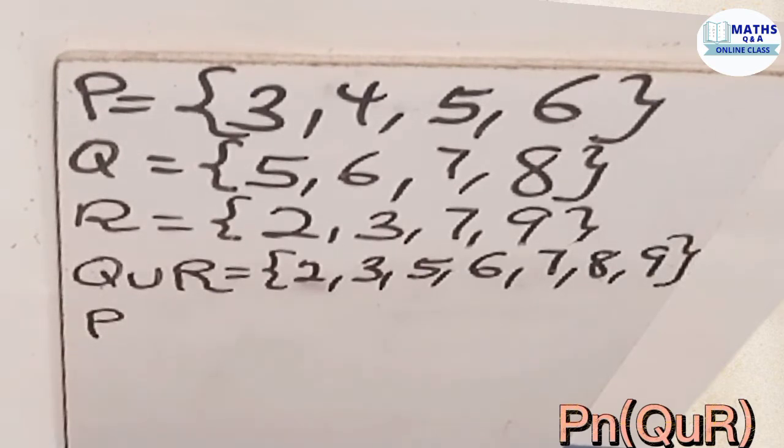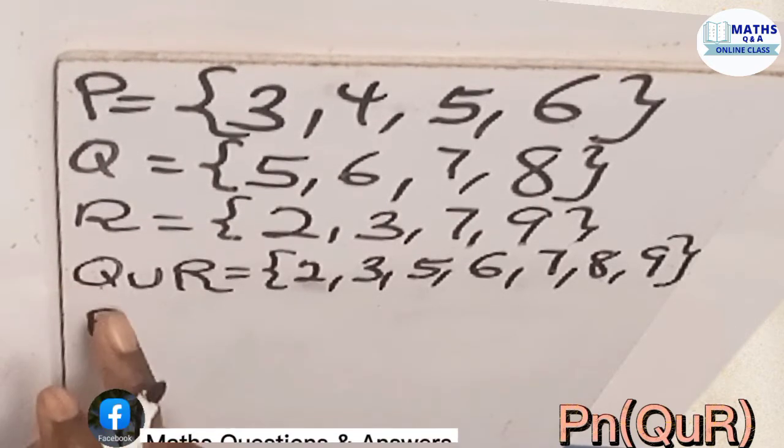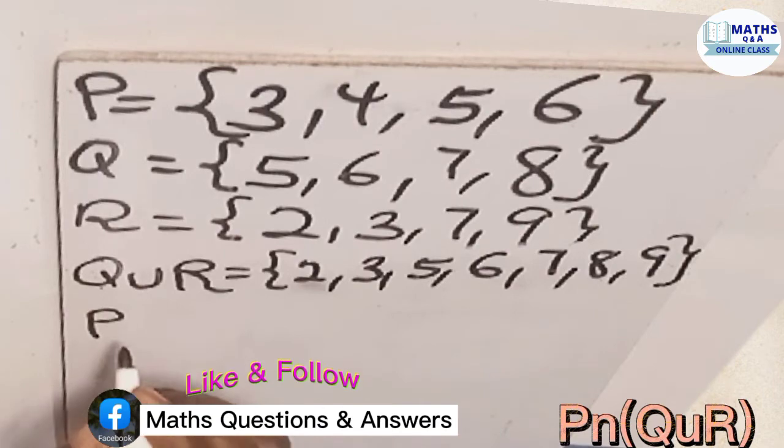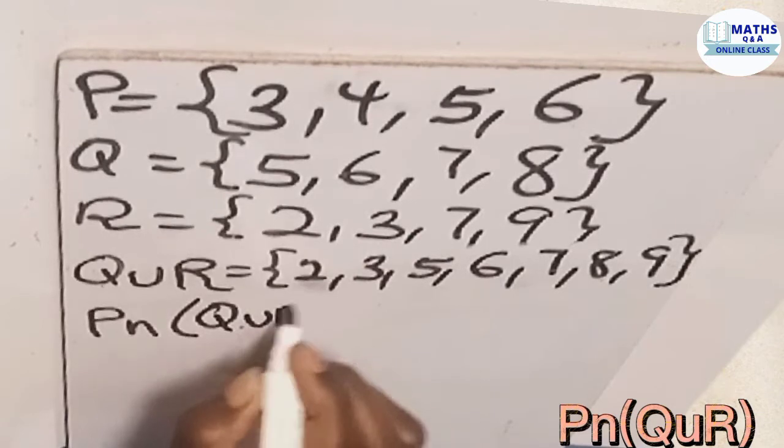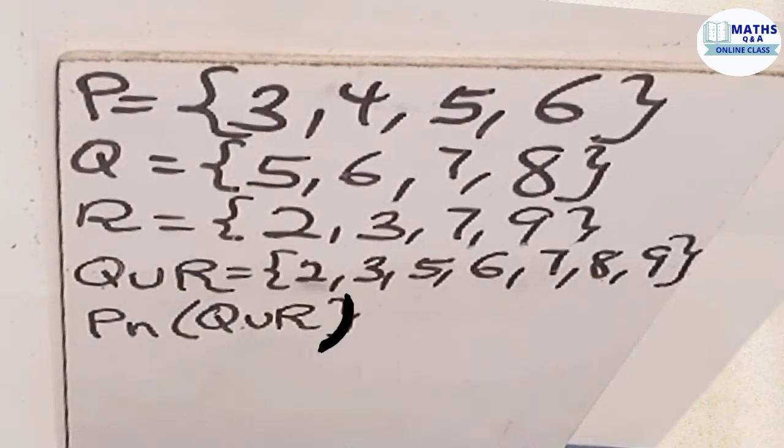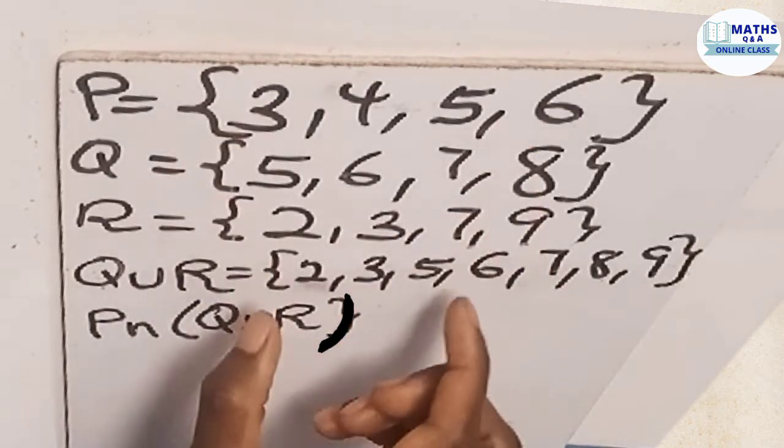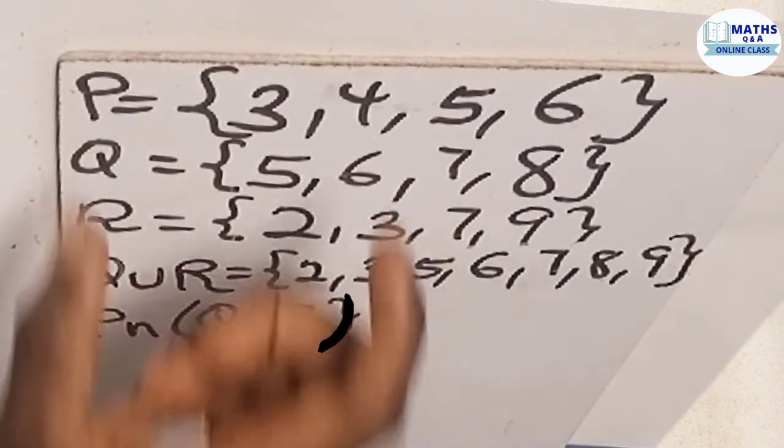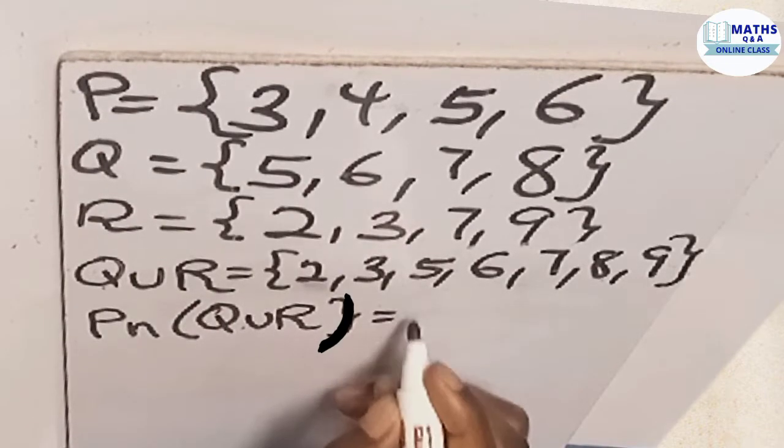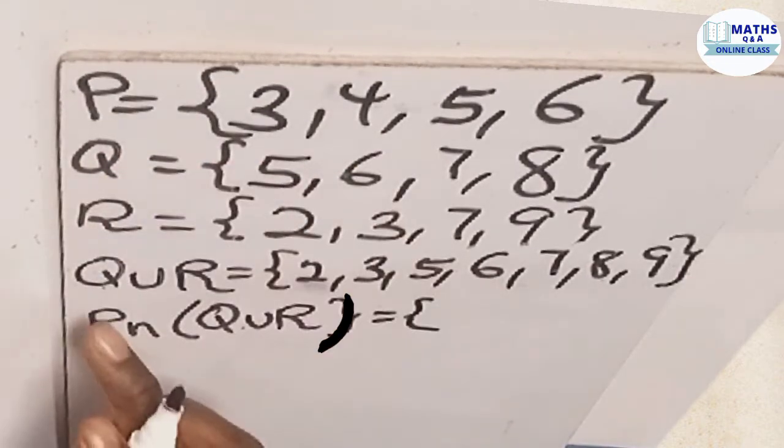So we have set P. And we have been asked to compare set P to the union of set Q and R. So P intersection the union of Q and R. What it means is that the intersection here means that members which are in P that can also be found in set Q union R. So we are going to compare these two sets and write those which can be found in those two sets.